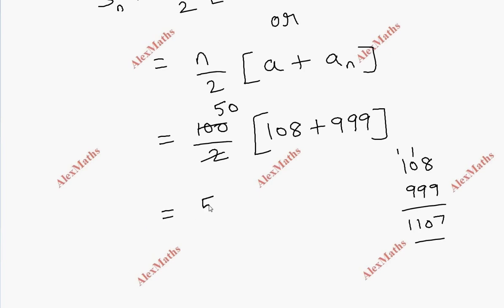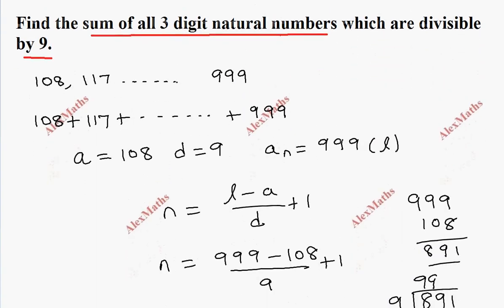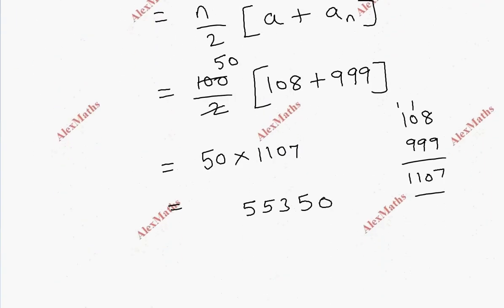So, the final answer is the sum of all three-digit natural numbers which are divisible by 9.